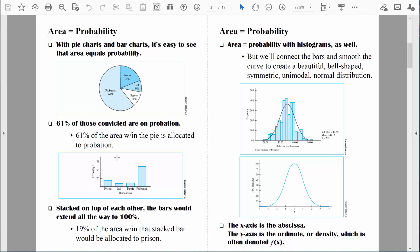The same thing would be true if we took that data and we represented it as bars in a bar graph. If we were to stack each of these individual bars on top of each other, it would extend all the way up to 100%. And then the size of any individual segment would represent the proportion of people either in prison, jail, parole, or probation. So, for example, 19% of the height of that tall bar would represent people in prison, 9% would represent people in jail, and so forth. Area equals probability when it comes to histograms as well.